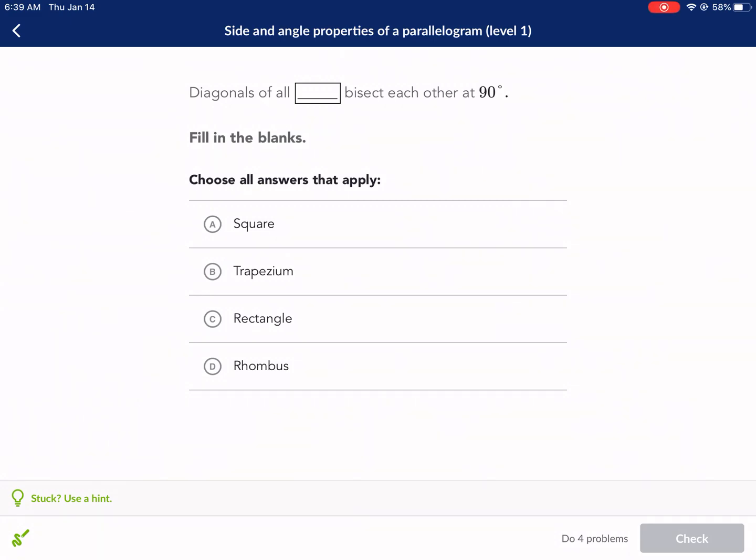Welcome, ladies and gentlemen, to another Khan Academy tutorial from Mr. West. Let's go ahead and start. For all our geometry students, we're doing side and angle properties of a parallelogram level 1.